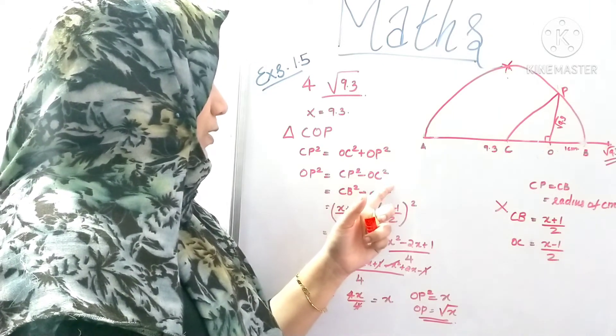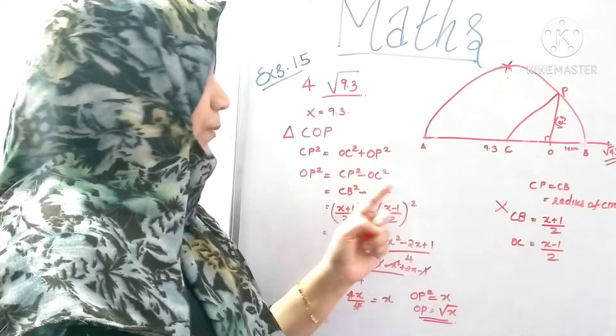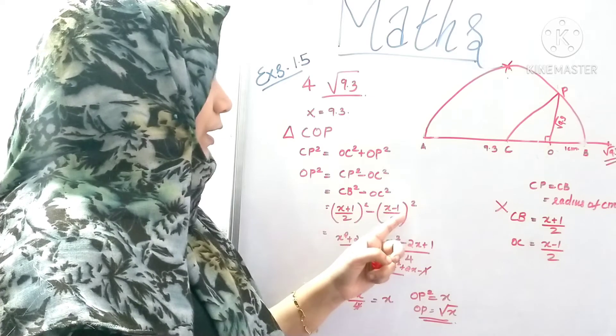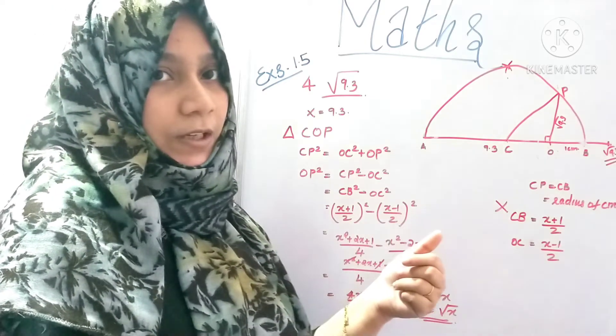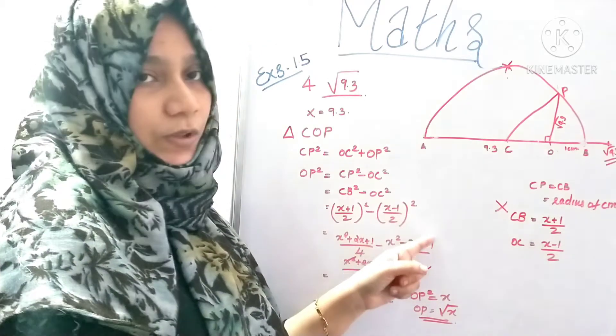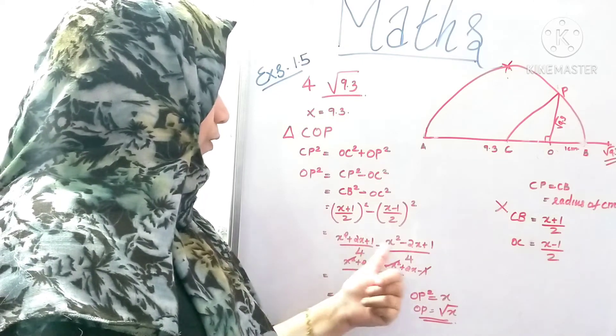CP squared minus OC squared. X plus 1 divided by 2 whole squared. This is a plus b all squared. This is a minus b all squared. a squared minus 2ab plus b squared. This is 2 minus square 4.